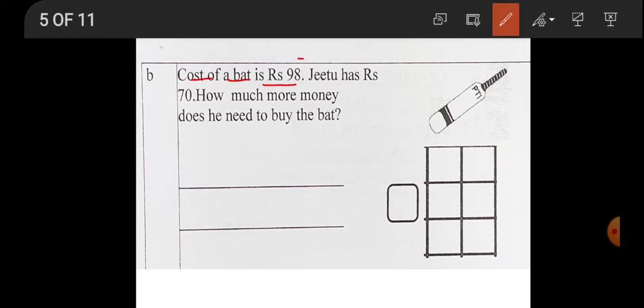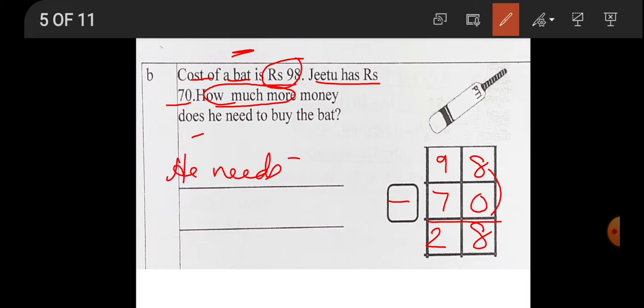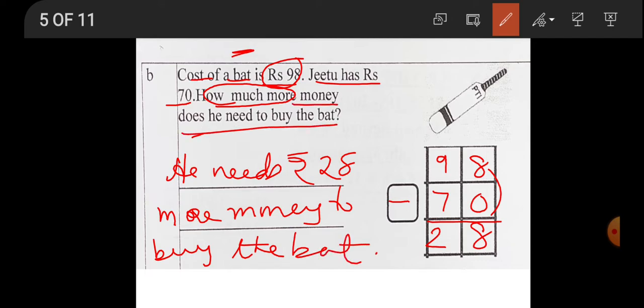Cost of a bat is rupees 98. Gitu has rupees 70. How much more means minus. Money does he need to buy the bat? So write down 98. How much more gives you minus. Here 70. 8 minus 0. 0 is nothing, so 8 will remain as it is. Now 9 minus 7. 9 fingers up, put 7 fingers down. How many left? 2. So how much more money does he need to buy the bat? He needs rupees 28, 28 more money to buy the bat.